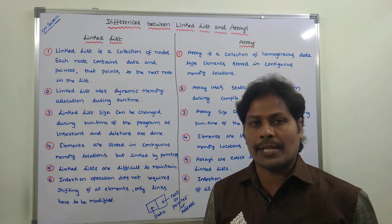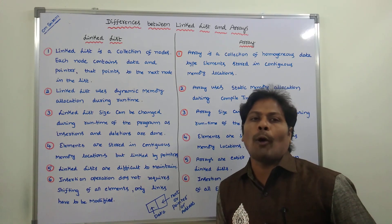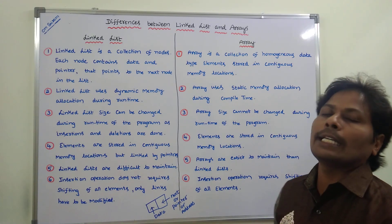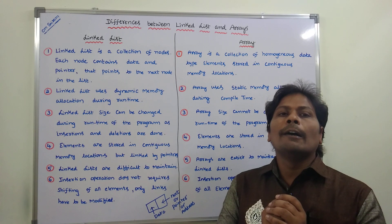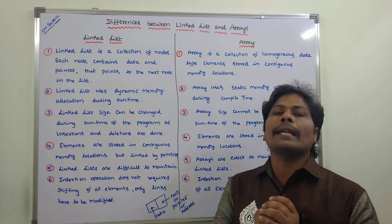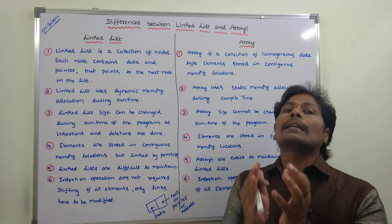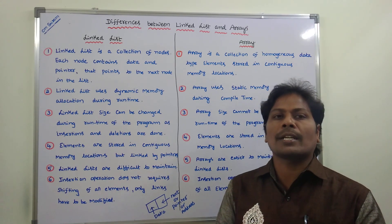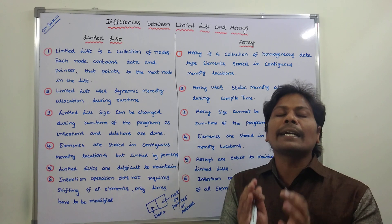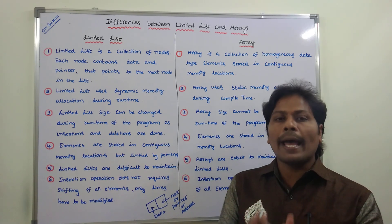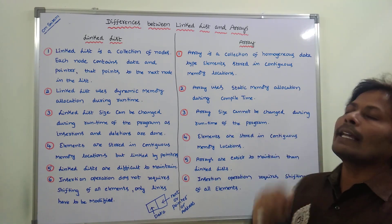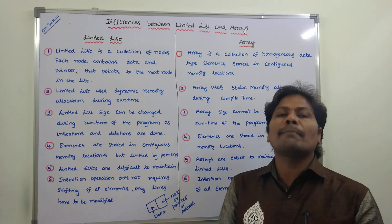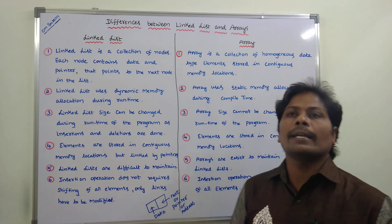Second point: a linked list uses dynamic memory allocation during runtime. For each and every node we can allocate memory at runtime, so that memory allocation is called dynamic memory allocation. Hence we can say that linked list uses dynamic memory allocation at runtime. While in the case of arrays, arrays use static memory allocation at compile time.